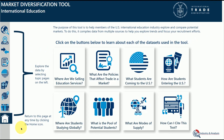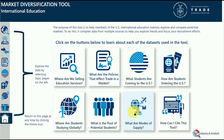This is the home page. It has background on the different datasets along with the definitions for the modes of supply, which are the different ways services can be supplied internationally. It also has guidance on citing the data in the tool.